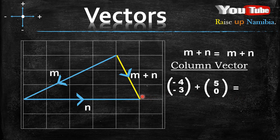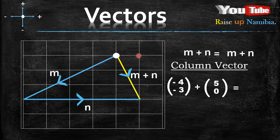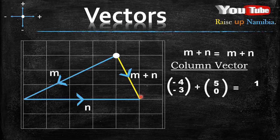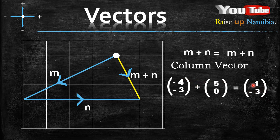Okay, so the column vector for M plus N will start here, because the vector is starting here — this is the tail. So we count on the x-axis. We start always on the x-axis. We are moving one to the right, so we'll have positive one because we moved to the right. And then from there, we move one, two, three going downwards. When we go down, it becomes negative, so it will be negative three. And that's your final answer. Is this the same answer that you got when calculating with the calculator? If yes, then you are on the right track and your answer is also correct.